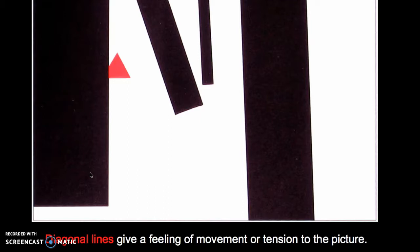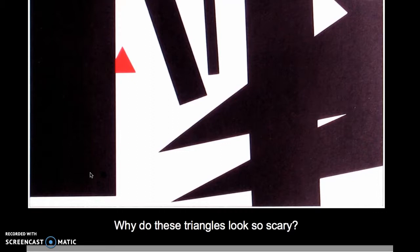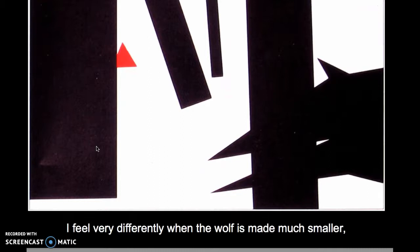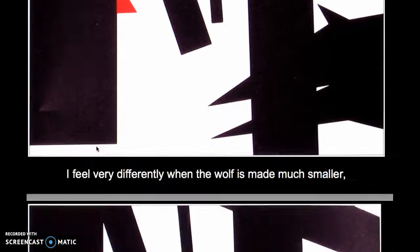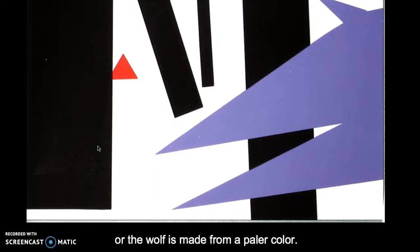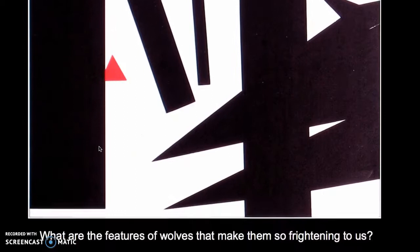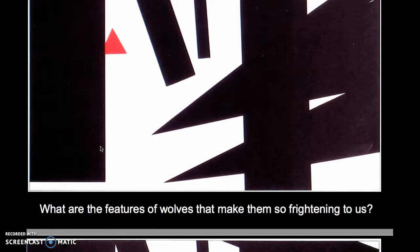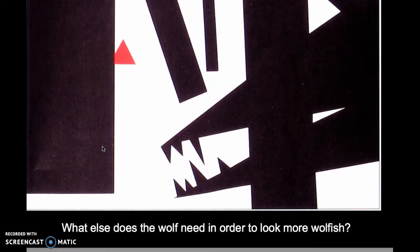Diagonal lines give a feeling of movement or tension to the picture. And here's our wolf. Why do these triangles look so scary? But the feeling changes when the wolf is made much smaller, or the points are changed to curves — somehow this wolf doesn't look so threatening anymore. Or if we change the color of the wolf to a paler color. She asks: what are the features of wolves that make them so frightening to us? The teeth, of course. What else does the wolf need in order to look more wolfish?